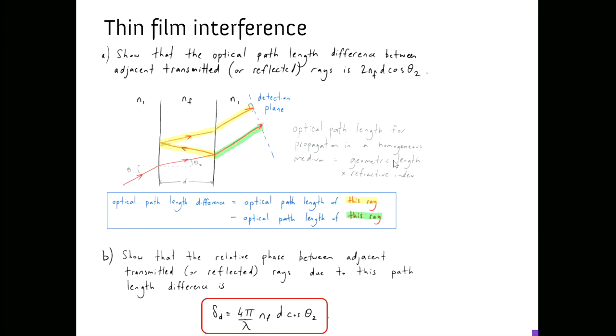You'll show on the assignment that the relative phase between adjacent transmitted or reflected rays due to the path length difference equals the expression: 4π n d cosθ / λ. This expression has dials: lambda (colour), the refractive index inside the medium, the separation d of the two film surfaces, and the angle of incidence or refraction — related via Snell's law. We'll now use this to simulate the colours and answer question 2.